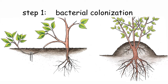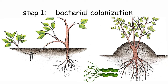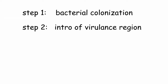Step 1 - Bacterial colonization: Whenever a wound is caused by any activity, the bacterial chromosomal genes called chv genes make adhesion easier, and bacteria closely bind with the plant cell at the wound site and form a colony around it.